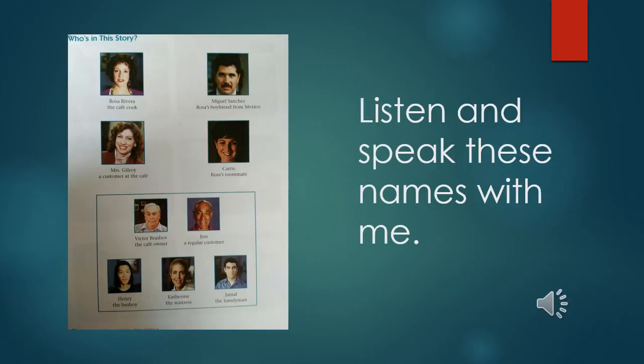Look in your photo stories book at page 36. Who's in this story? We know Rosa and Miguel, but now you can listen as I say these names and practice them with me. The first one: Rosa Rivera, the cafe cook. Miguel Sanchez, Rosa's boyfriend from Mexico.